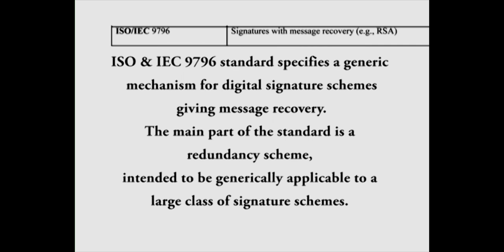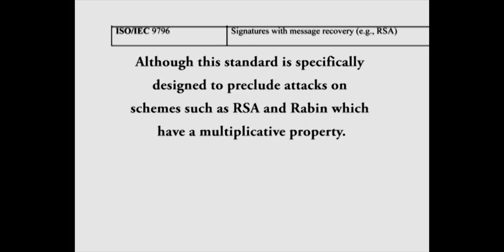ISO and IEC 9796 standard specifies a generic mechanism for digital signature schemes giving message recovery. The main part of the standard is a redundancy scheme intended to be generically applicable to a large class of signature schemes, although this standard is specifically designed to preclude attacks on schemes such as RSA and Rabin which have multiplicative properties.